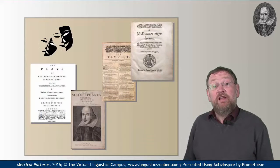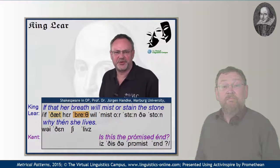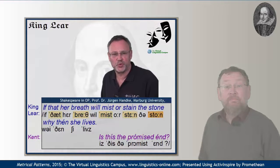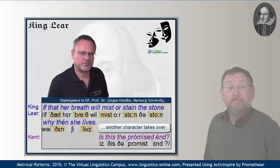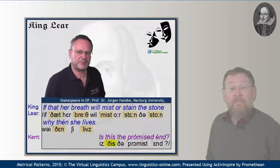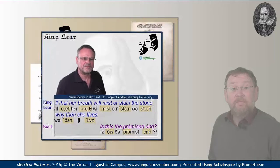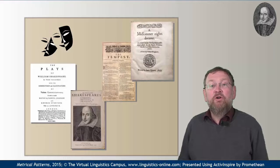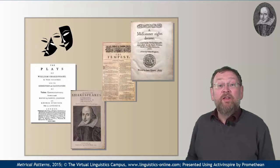Some others are divided among two or more characters: 'If that her breath will mist or stain the stone — why then she lives.' 'Is this the promised end?' This means that in a conversation of two or more characters, each of them speaks only a part of the line.